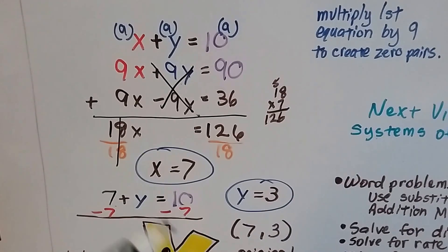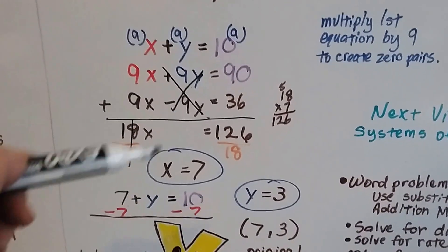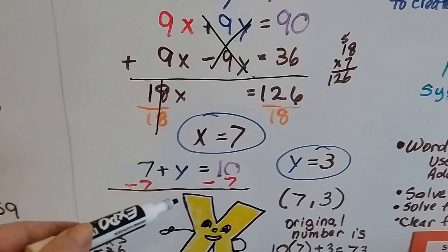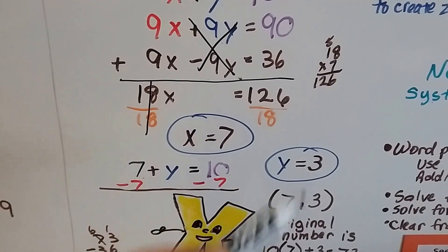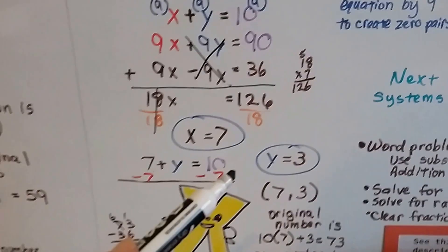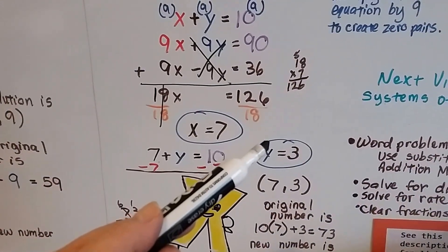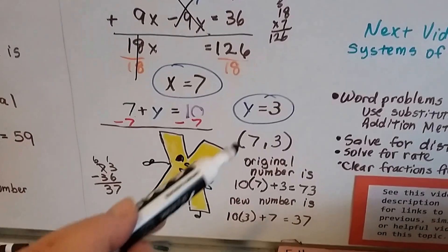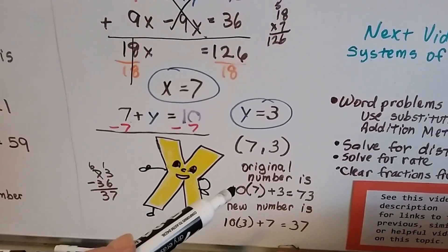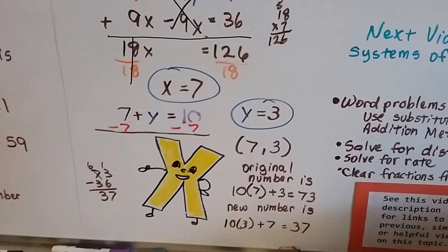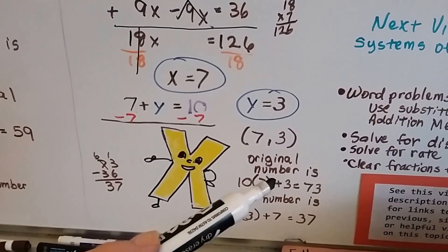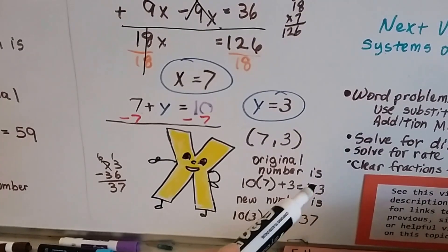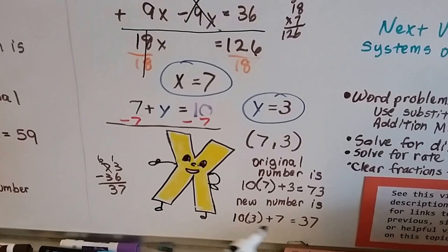Now we take x plus y equals 10 and plug in the 7 for x. We get 7 plus y equals 10. Take away 7 from each side and we see that y equals 3. So we know y is 3 and x is 7. That's our solution, 7 and 3. So our original number is 10 times 7 plus 3, so it's 73. The new number is 36 less. So if we have 73 and we take away 36, we get 37. And it's the reversed order of 73 — it's 37. See how that worked?